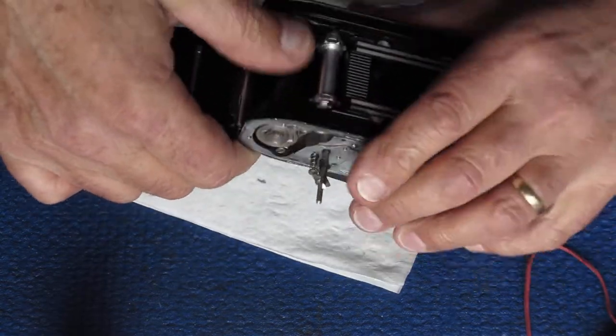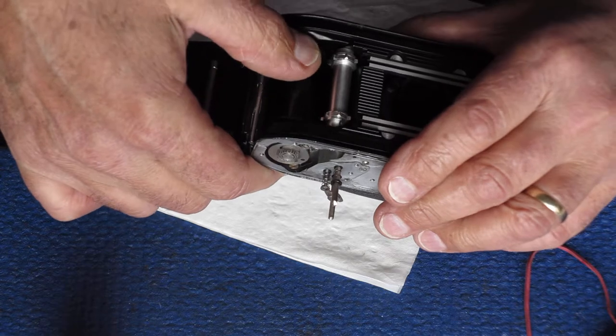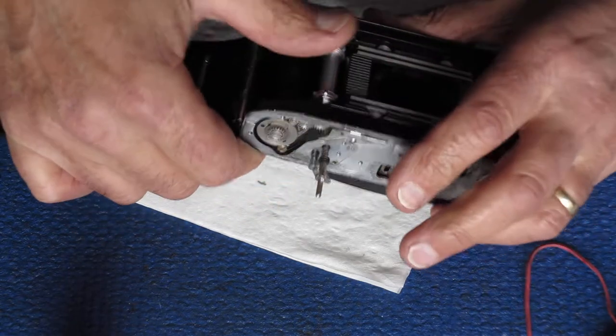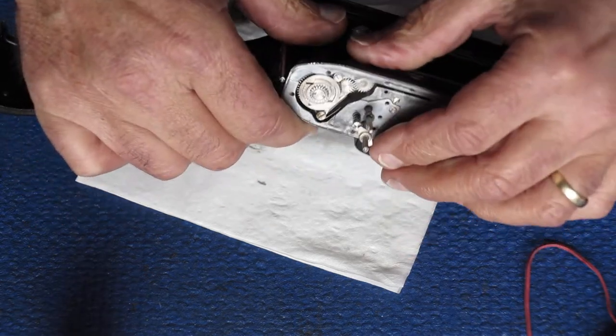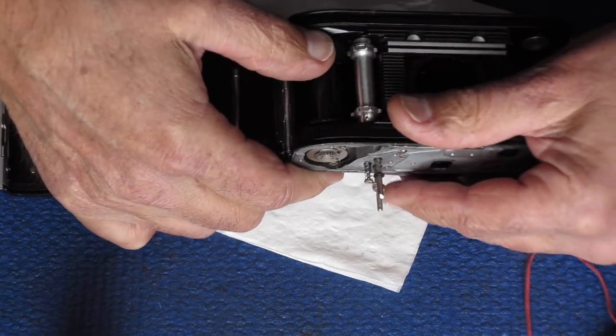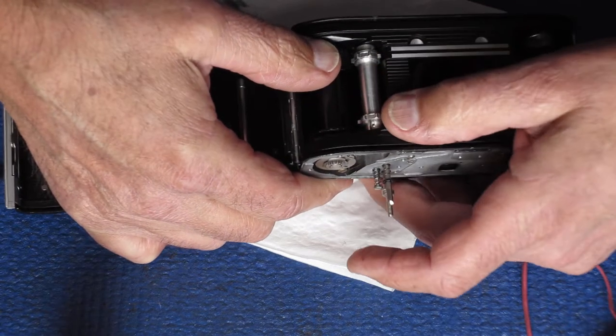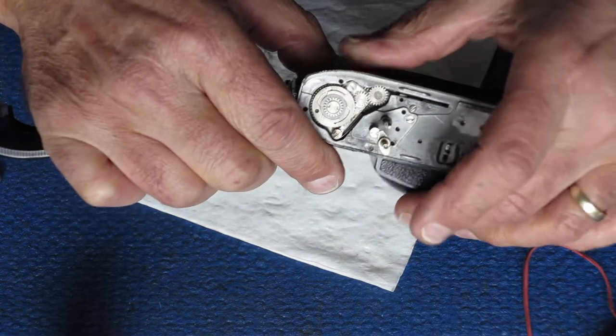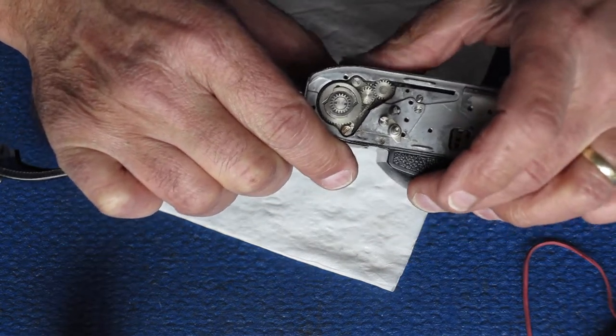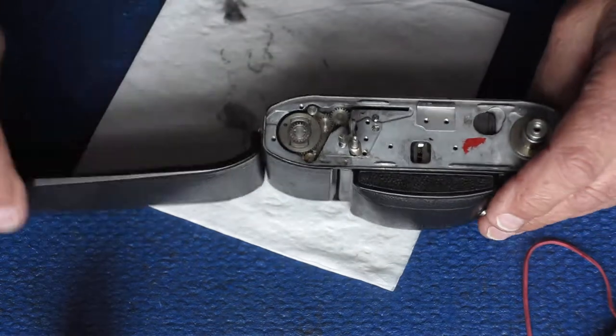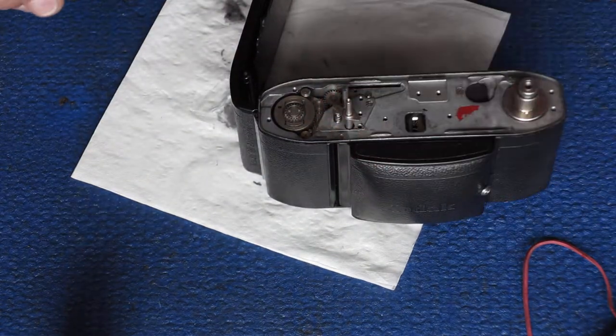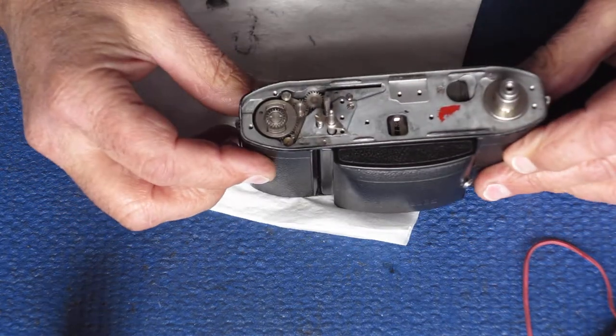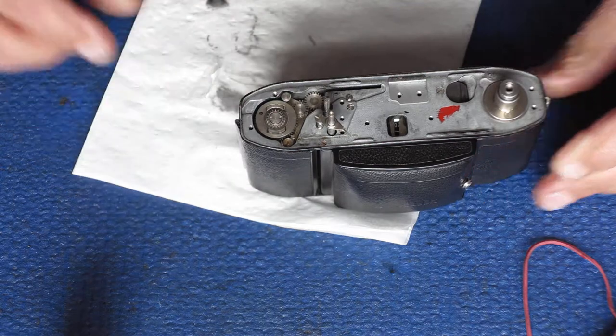Now as I revolve the film advance sprocket take up spool, you'll see that the film sprocket revolves too. But if you hold your thumb on the sprocket, the film take up spool, you can revolve the sprocket because the clutch is slipping. You can feel the clutch slip. That's what allows you to rewind the film. That clutch is slipping and allowing it to revolve backwards. Alright. That part's good. On to the next part.